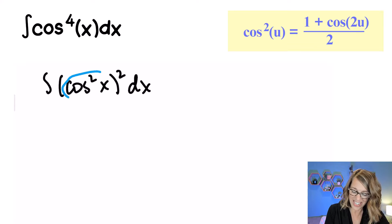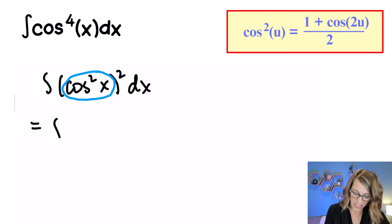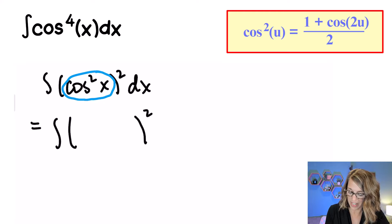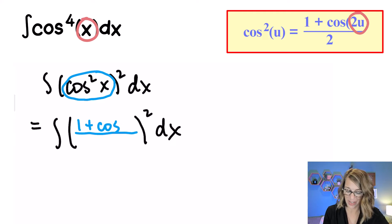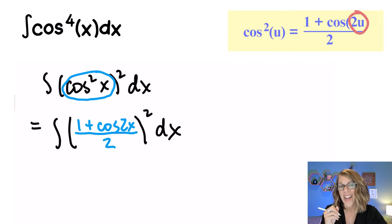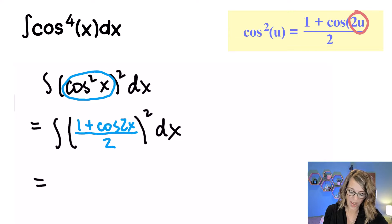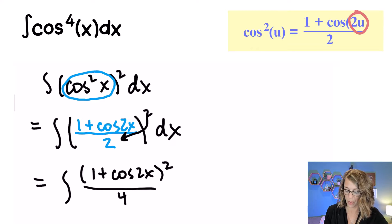I'm going to replace what is inside this outer squared with my formula. We end up with 1 plus cosine 2x — that's twice the original angle, and our original angle is just x — all divided by 2. Now I've got that power 2 on the outside, so I need to square the numerator to get (1 + cos2x)² and also square the denominator: 2 squared equals 4, dx.